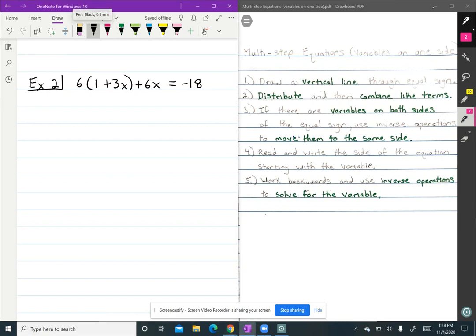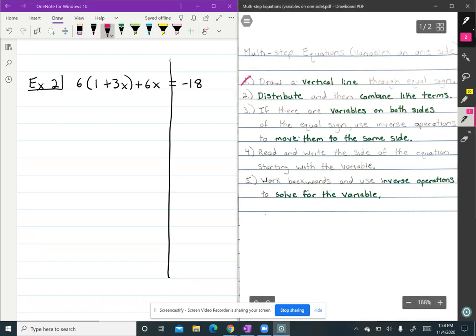Our first step is to draw a vertical line through our equal sign, so we can split our equation into two expressions. This will remind us that whatever we do to one side, we have to do to the other side of the equal sign.